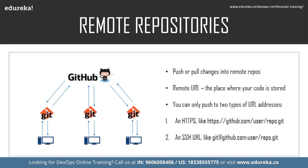Git associates a remote URL with a name, and your default remote is usually called origin. You can use the git remote add command to match a remote URL with a name. For example, you type in the command line: git remote add origin [remote URL]. This associates the name origin with the remote URL. You can also use the command git remote set-url to change a remote's URL.